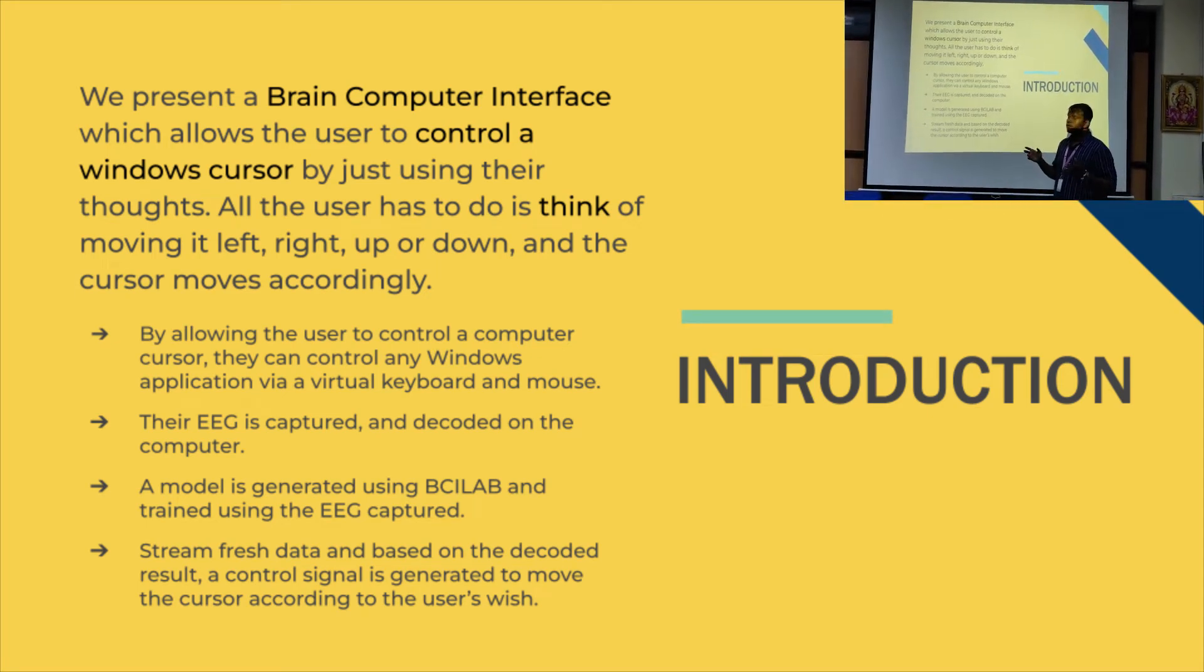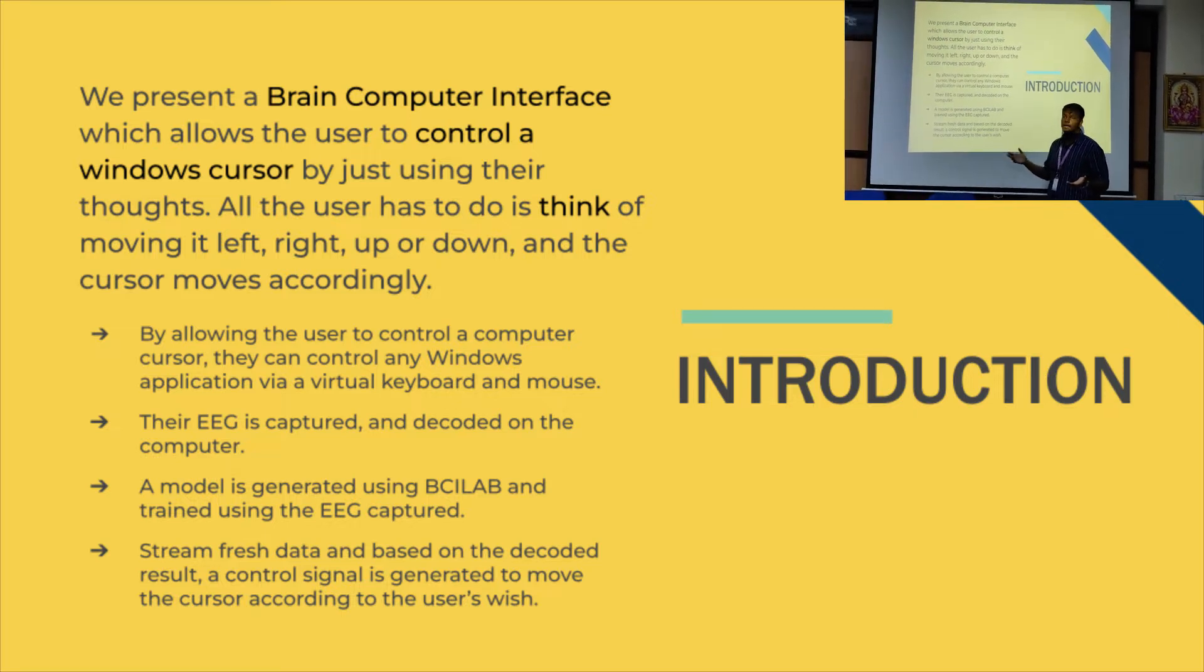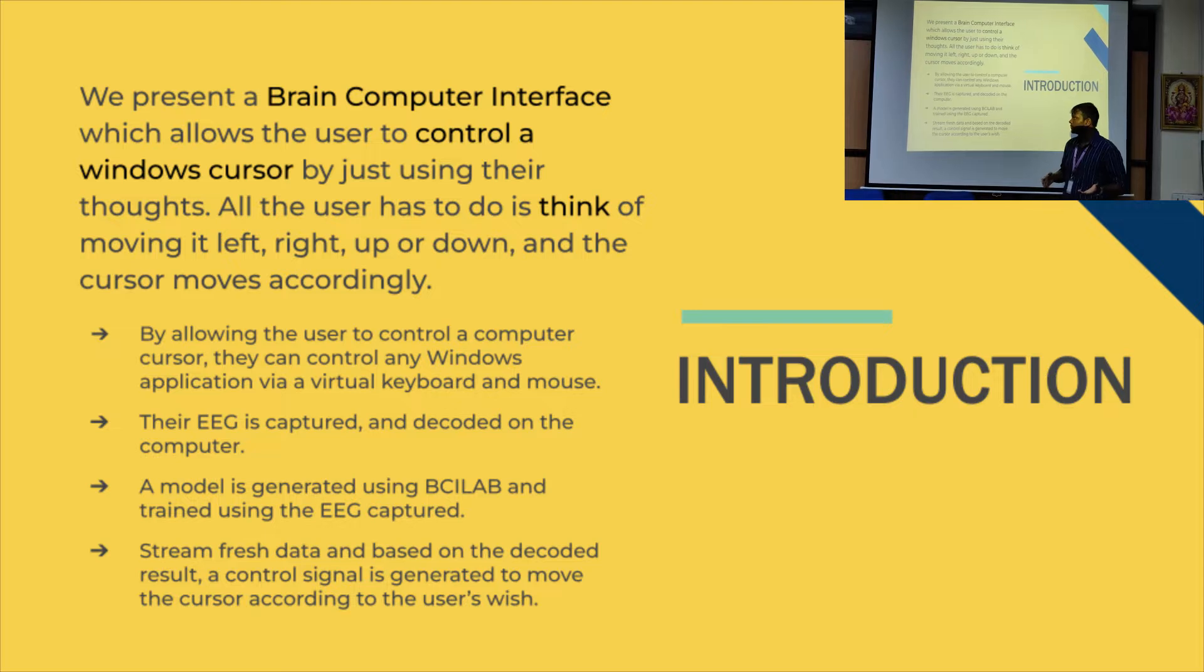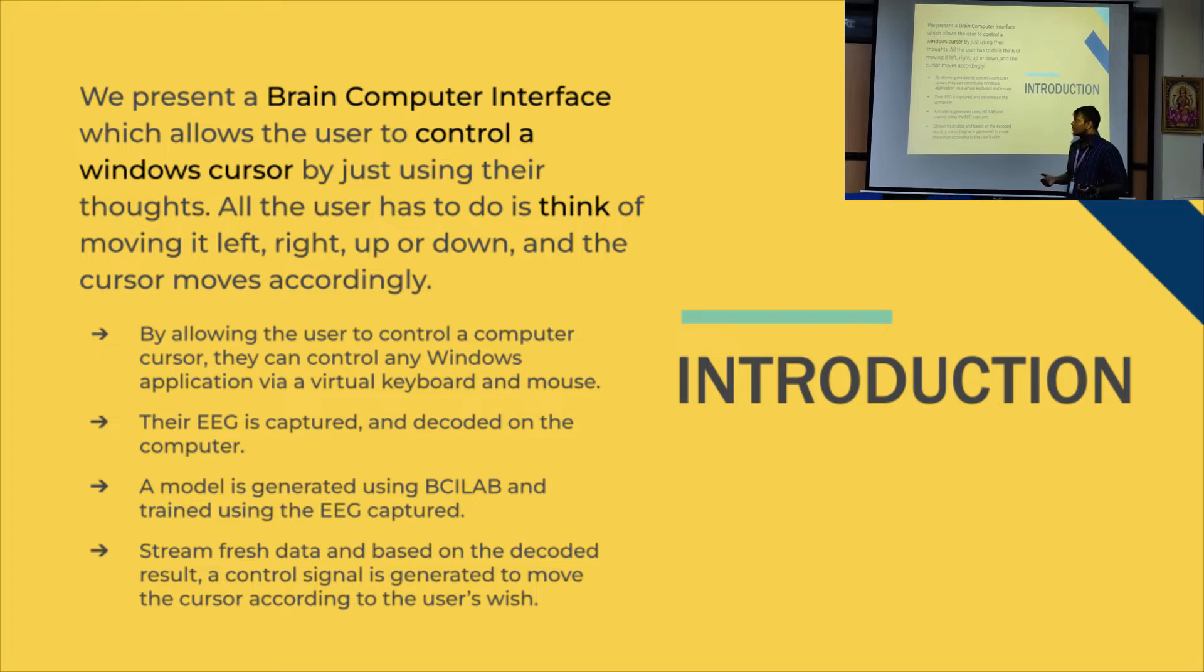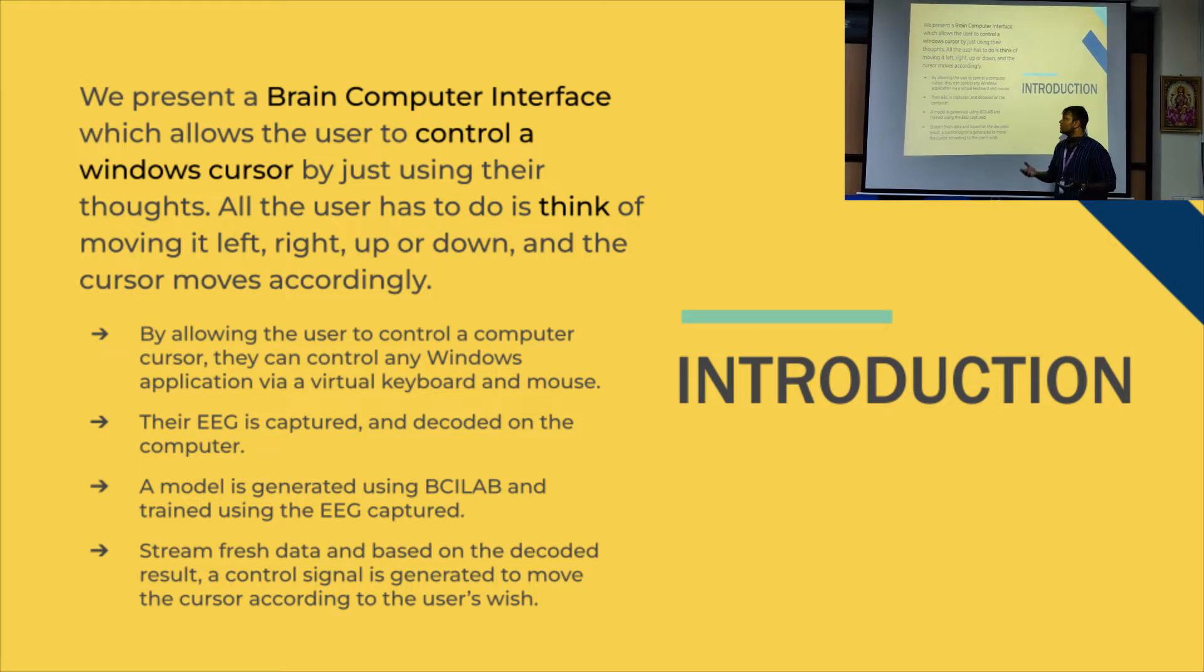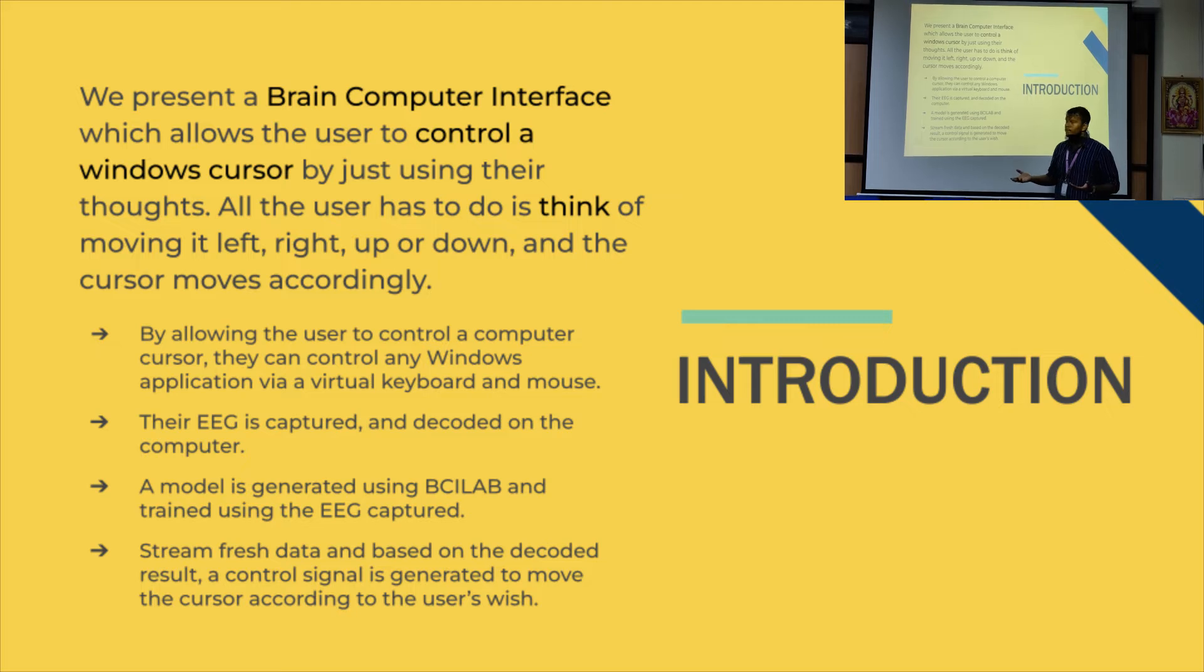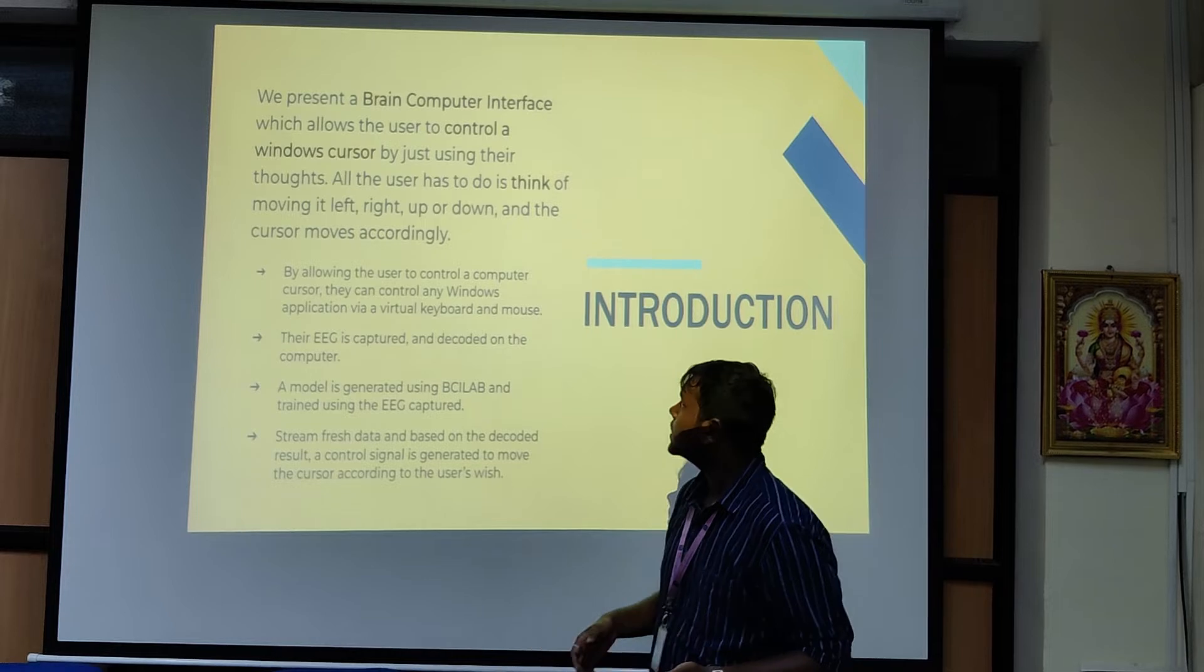So the user, all he has to do is think about the certain action that he wants to perform. The EEG data is captured and decoded onto a computer. Then a model is generated using BCI lab and trained using the EEG data that we have collected. And this model is then used to predict the next set of actions that the user wants to perform. A fresh data is streamed into the model and a control signal is generated to move the cursor according to the user's wish.